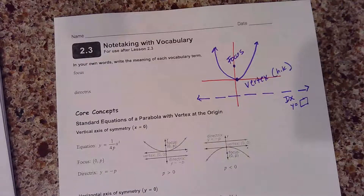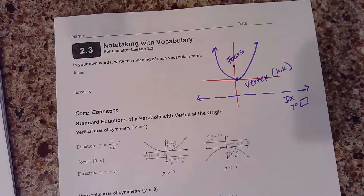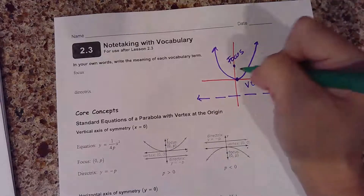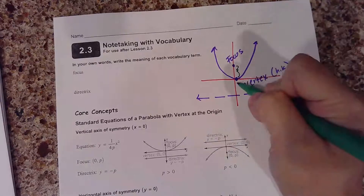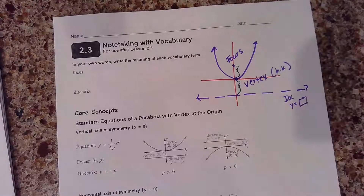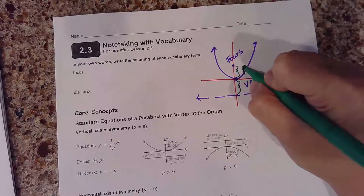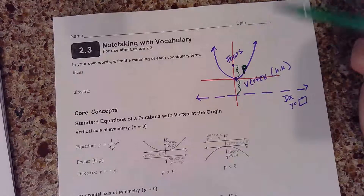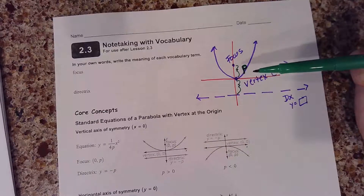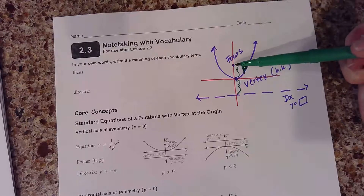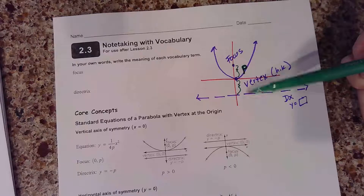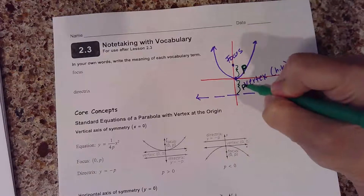What we're getting at here is there are two other points that play a factor in your equation when you write an equation of a parabola. We call this distance P. There's a distance between the vertex and the focus and the vertex and your directrix. The math gods decided it was going to be called P. So there's this distance P between your focus and your vertex and then your directrix and your vertex — it's the same distance.